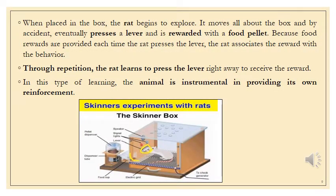In the Skinner box experiment, Skinner placed a rat in a box and the rat began to explore. In this instinctive exploratory behavior, the rat moved all about the box, and by accident eventually pressed a lever. It was rewarded and reinforced with a food pellet. After the first, second, or third attempt receiving a food pellet, the rat continuously started moving in that direction, pressing the lever repeatedly because food rewards were provided each time it pressed. The rat associated the reward with that behavior, and through repetitions learned to press the lever right away to receive the reward.